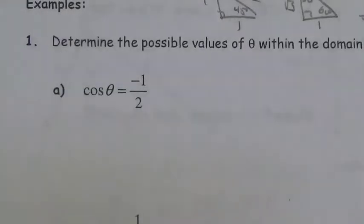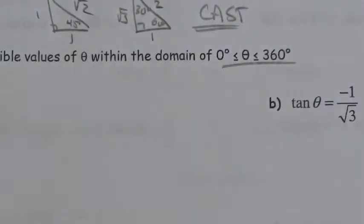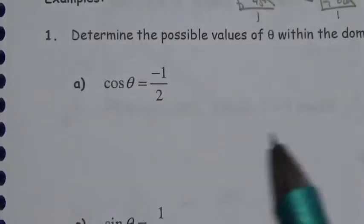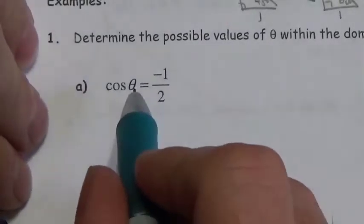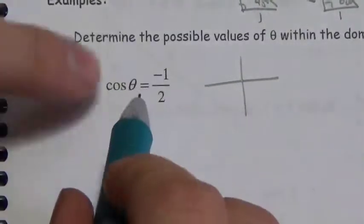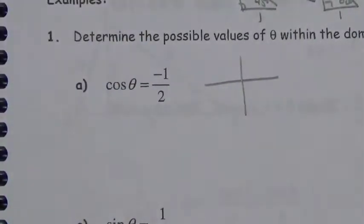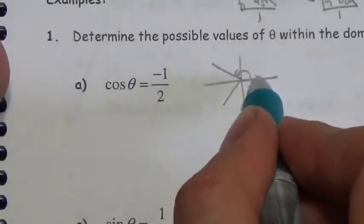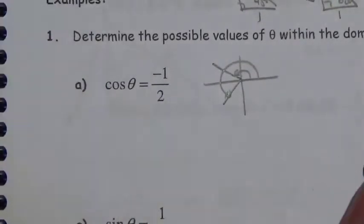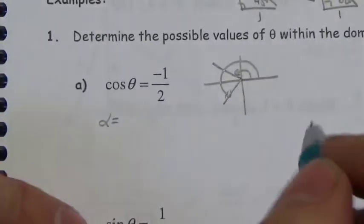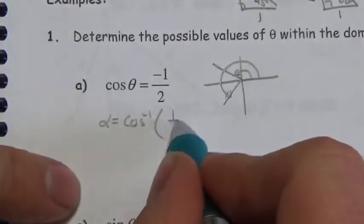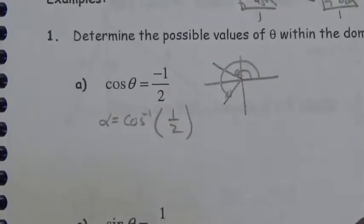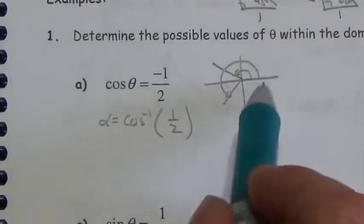We're looking for the domain of 0 to 360. We start with cosine of theta equal to negative one-half. The first thing I do is acknowledge that this is negative. Cosine is related to the x-coordinate, which is negative in quadrants 2 and 3, so I'm looking for two angles. Then I find the reference angle — the inverse cosine of positive one-half, not negative one-half. The negative told me where to look.